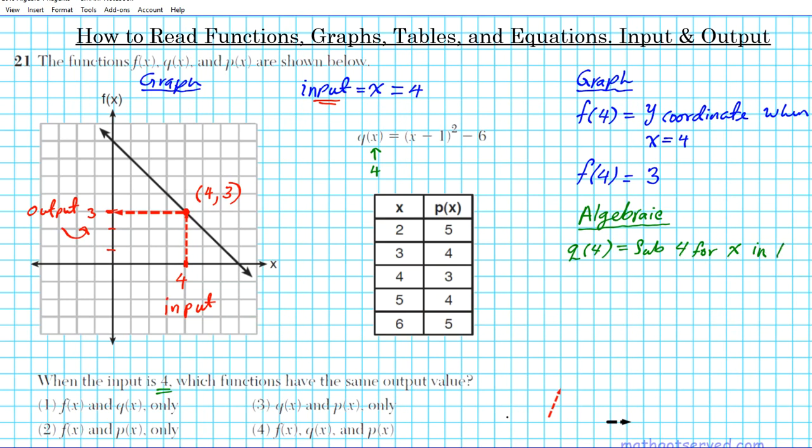Okay, substitute 4 for x in the equation and simplify, and that's what you have to do. So what equation am I talking about? Well, it's the equation that we're given here: q(x) equals the quantity (x minus 1) squared minus 6. So we're going to take out all the x's, let's take them out parentheses and then we're going to replace it with 4. Alright, so q(4) is going to be (4 minus 1) quantity squared minus 6.